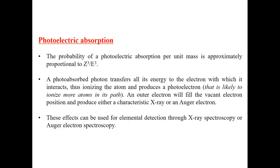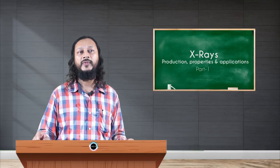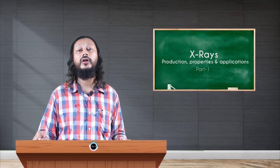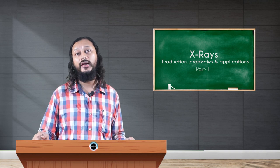Photoelectric absorption, or photo absorption: the probability of photoelectric absorption per unit mass is approximately proportional to Z³ over E³, where Z is the atomic number of the element. The photo-absorbed photons transfer all their energy to the electrons with which they interact, ionizing the atom in this process. This ionizes many more atoms and creates ionization chains. The outer shell electrons fill the vacancies left by other electrons — this is called the Auger shower. These effects can be used for elemental detection through X-ray spectroscopy or Auger electron spectroscopy.